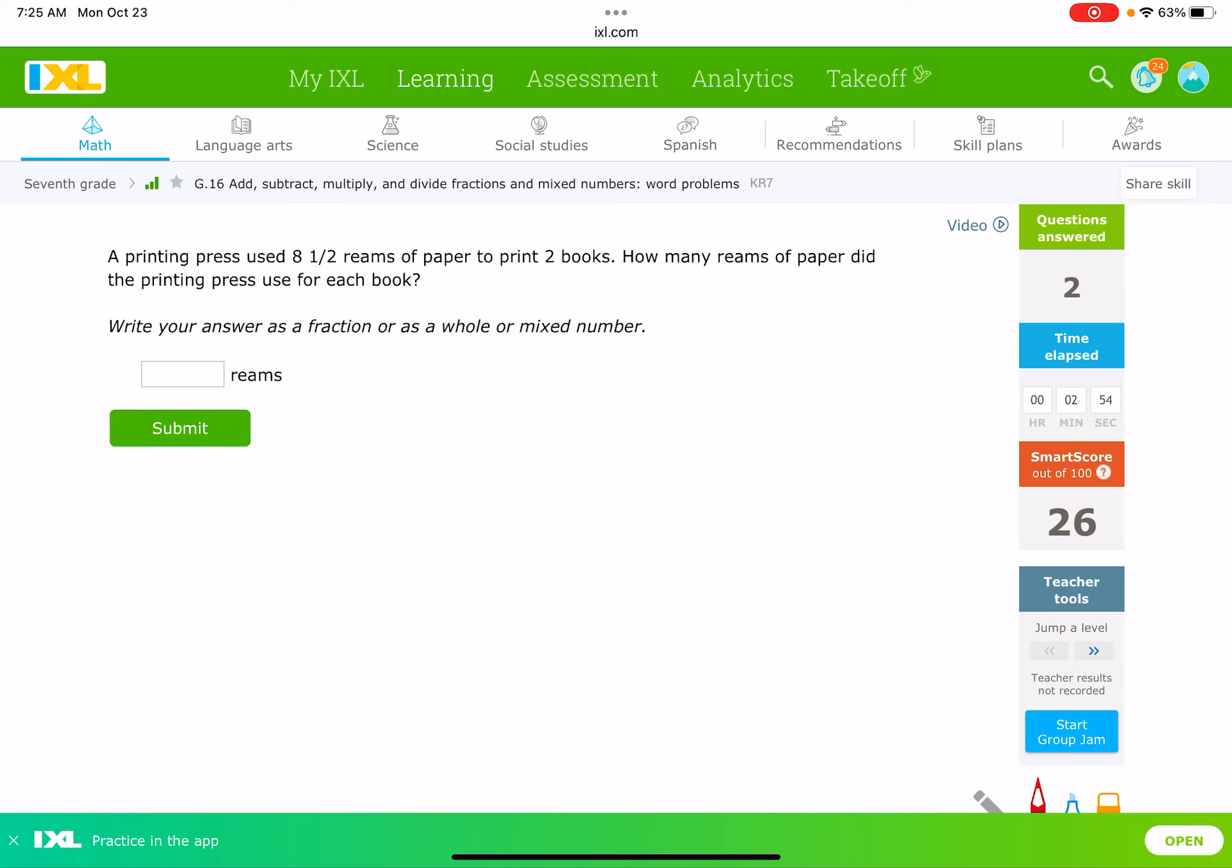The next question. A printing press used 8½ reams of paper to print two books. How many reams of paper did they use for each book? Here's our clue word, each book. So, they used 8½ reams for two books, and they want to know for each book. And so, this is the clue that we need to divide here. We need to figure out how 8½ divided by 2. Now, because this is a fraction and we're dividing by a whole number, we can make this whole number 2 over 1. And, just a reminder, when you're dividing fractions, a good way to do this is keep, change, flip.